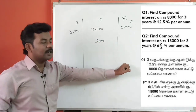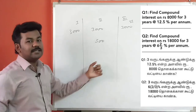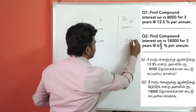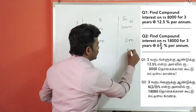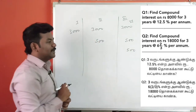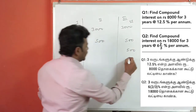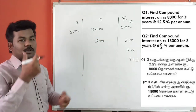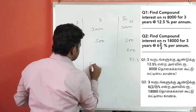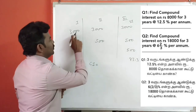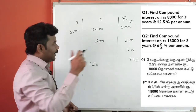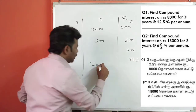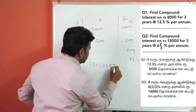The second year and third year are complete. Then 500 multiplied by 1 by 6 gives 83.3. Now adding all these: compound interest equals 3,000 plus 3,000 plus 3,000 equals 9,000. Then 9,000 plus 1,500 equals 10,500. And 10,500 plus 83.3 gives 10,583.3. That is the answer.